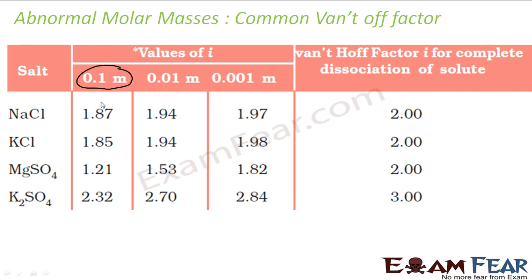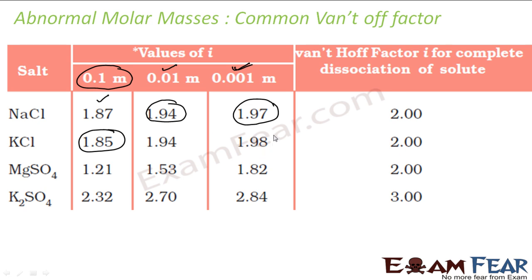Some typical Van't Hoff factor values: for a 0.1 mol solution, the value of I for NaCl is 1.87. If you dilute it, the value of I increases. If you dilute it further, the value increases further. Similarly for KCl (potassium chloride), the value of I for 0.1 mol solution is 1.85. If you dilute it, the value increases to almost 2. So the value of I also depends on the molarity of the solution.